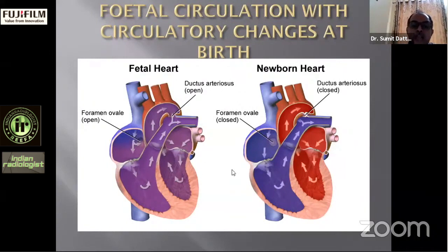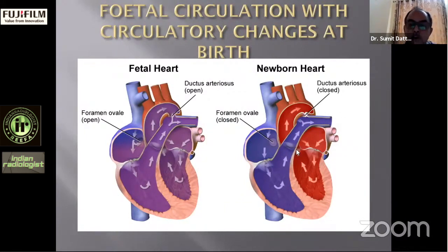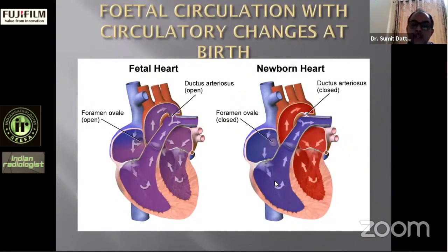At birth, as the placenta is shed, there is a fall in pulmonary arterial pressure, and the pulmonary arterioles now participate in oxygenation. Desaturated blood from the right ventricle goes to the pulmonary circuit through the pulmonary artery; oxygenated blood then reaches the left atrium through the pulmonary veins, raising pressure in the left atrium, forcing the foramen ovale to close. From the left atrium, blood goes to the left ventricle and on to the aorta. The ductus arteriosus also closes, forming the ligamentum arteriosum, leaving two independent circuits — right heart and left heart — connected by pulmonary circulation in a figure-of-eight pattern.